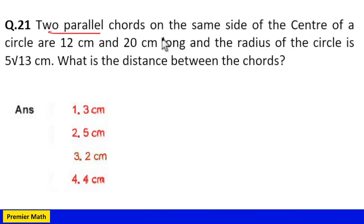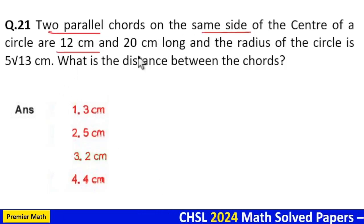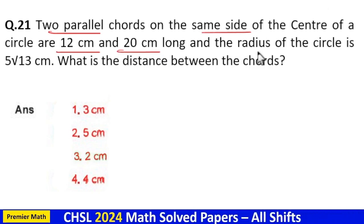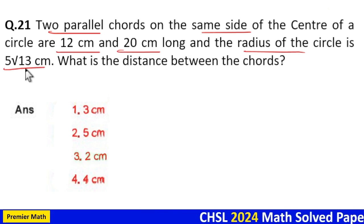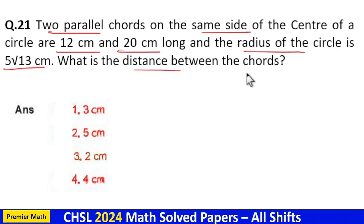Two parallel chords on the same side of the center of a circle are 12 cm and 20 cm in length, and the radius of the circle is 5√13 cm. What is the distance between the chords?